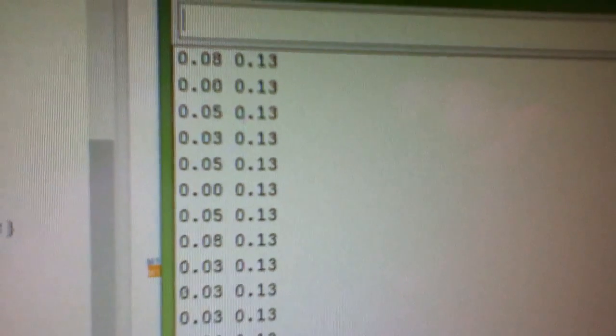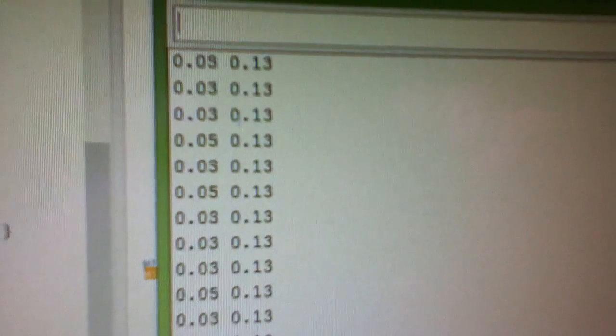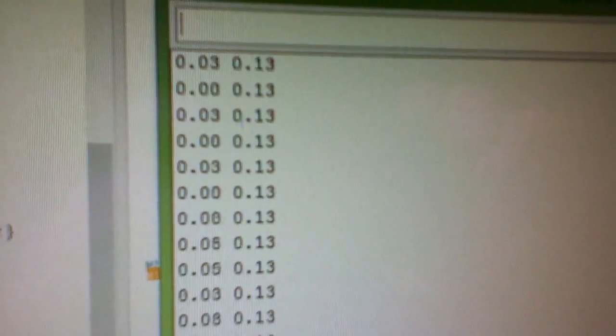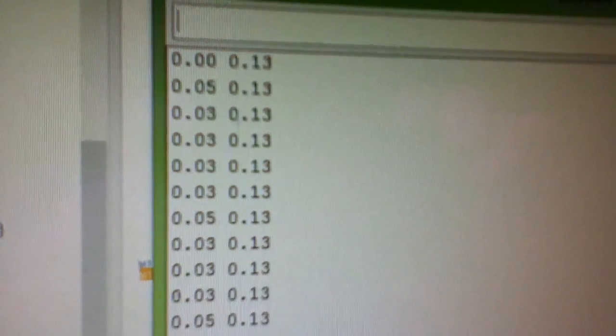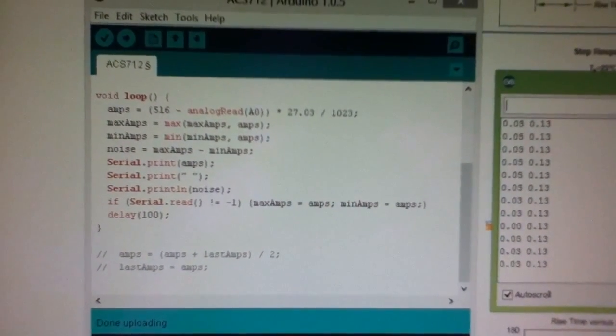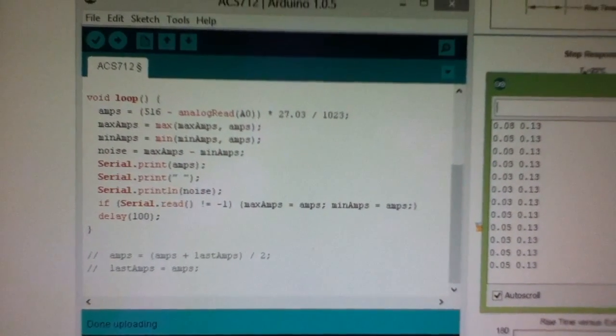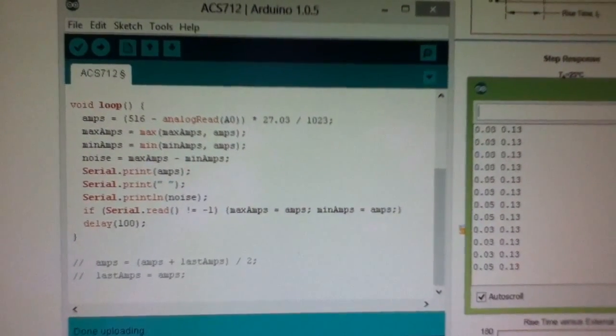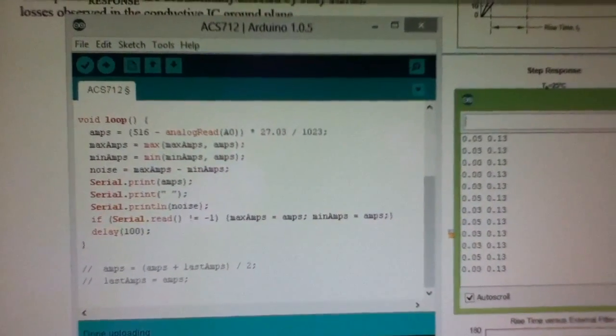We're getting 130 milliamps of noise and that's a problem because it's causing havoc with my current measurements for the MPPT charge controller. I was wondering whether I could get that noise figure down. I did think of using an averaging technique, but what I wanted to do was look at the data sheet and see whether there's anything on there that would help with the noise figure.